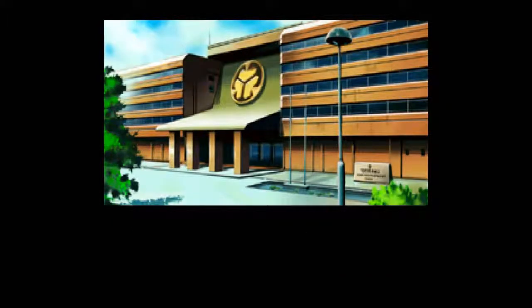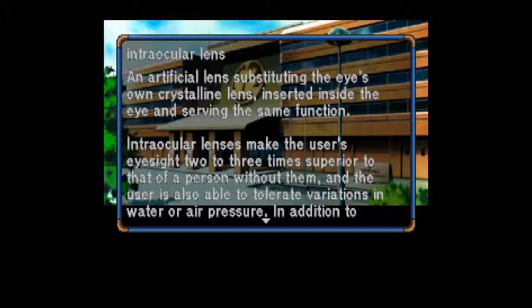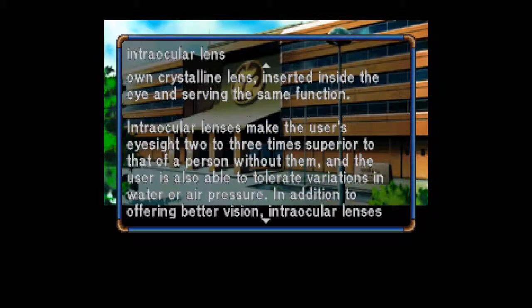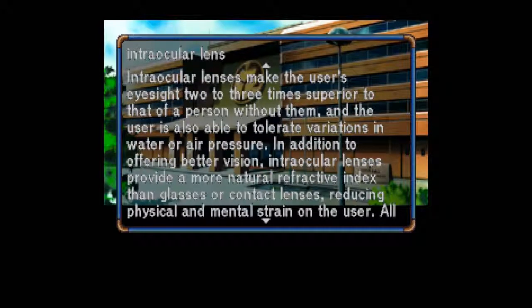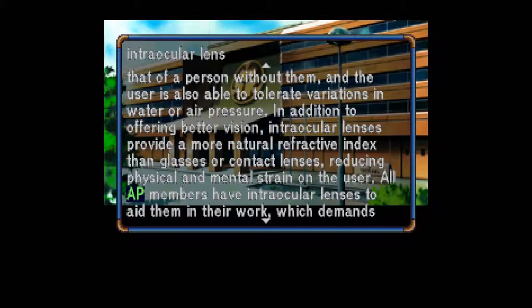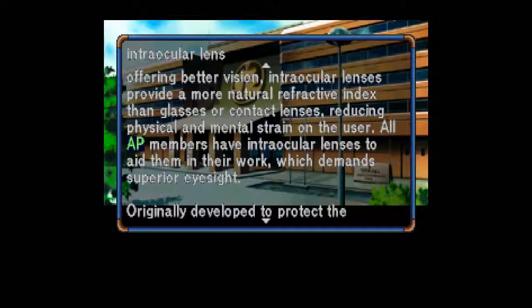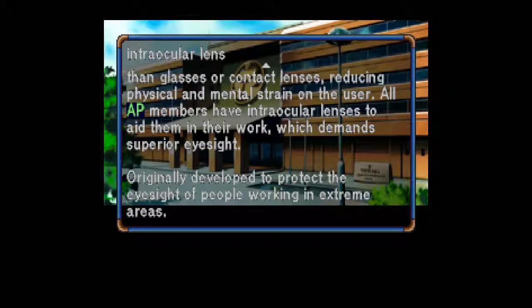Intraocular Lens: An artificial lens substituting the eye's own crystalline lens, inserted inside the eye and serving the same function. Intraocular lenses make the user's eyesight two or three times superior to that of a person without them, and the user is also able to tolerate variations in water or air pressure. In addition to offering better vision, intraocular lenses provide a more natural refractive index than glasses or contact lenses, reducing physical and mental strain on the user. All AP members have intraocular lenses to aid them in their work, which demands superior eyesight. Originally developed to protect the eyesight of people working in extreme areas.